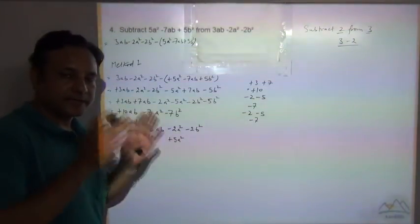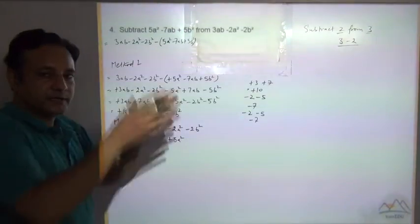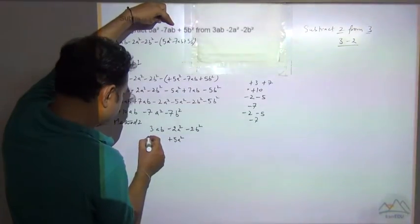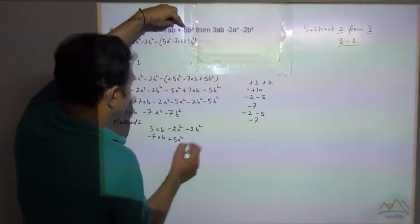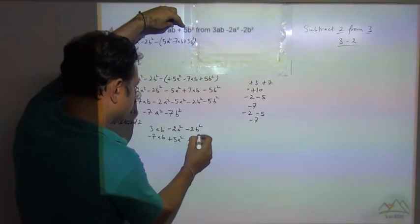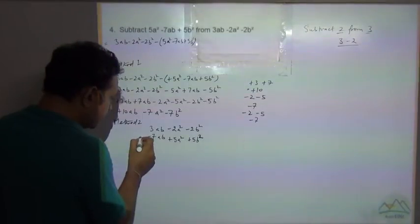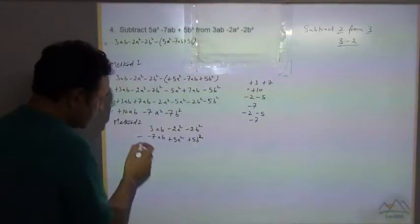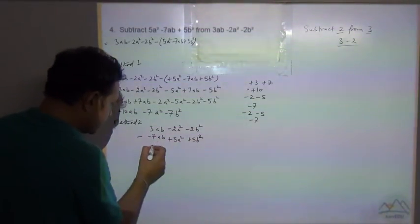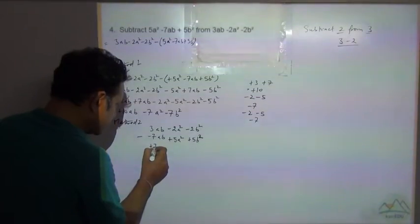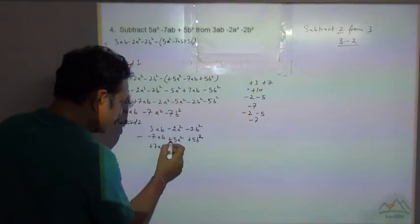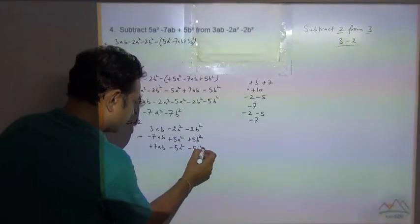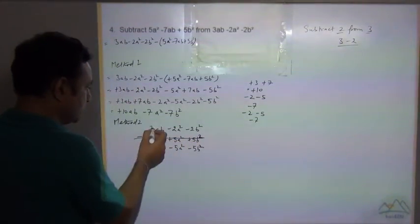In the column method, we place like terms in line, just like addition. This is the like term: minus 7ab, plus 5b². We put unlike terms in separate lines. For a²: minus 2a² in line. Changing signs for subtraction: minus times plus equals minus 5a², minus 5b². No sign outside means plus sign.